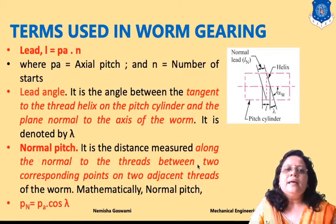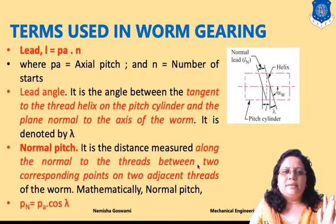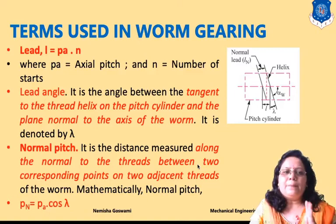Normal pitch is the distance measured along the normal to the threads — at some angle to the threads — between two corresponding points on two adjacent threads. Mathematically, it is given by: Pn = PA × cos(λ), where λ is the lead angle.